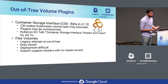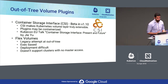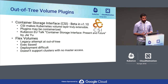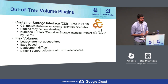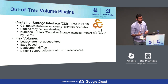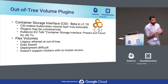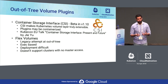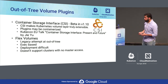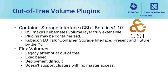This is where out-of-tree volume plugins come in. Container Storage Interface (CSI) went to beta in Kubernetes 1.10. The idea with CSI is to make the volume layer truly extensible — volume plugins can be deployed on top of Kubernetes as just another workload. They can be containerized and deployed using 'kubectl create -f some.yaml'. The volume plugins are now completely decoupled from the core Kubernetes codebase.